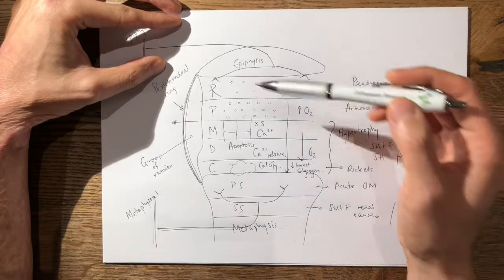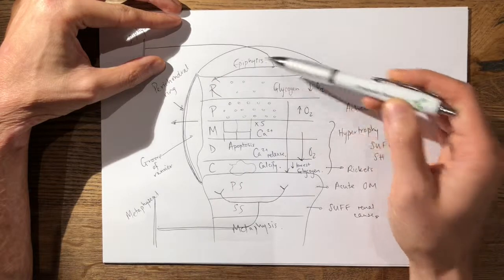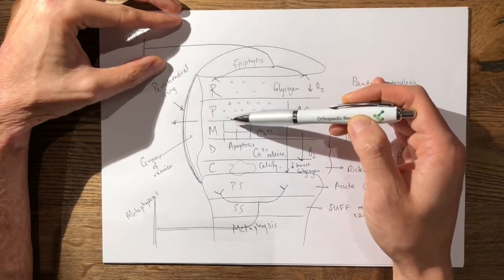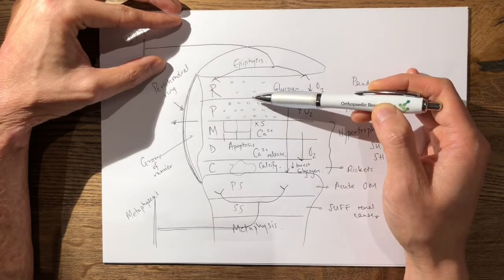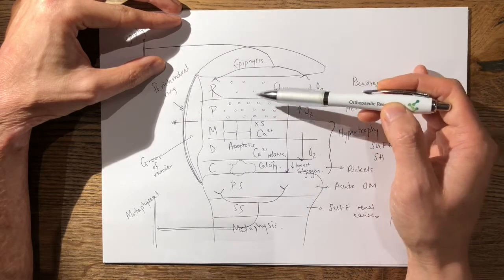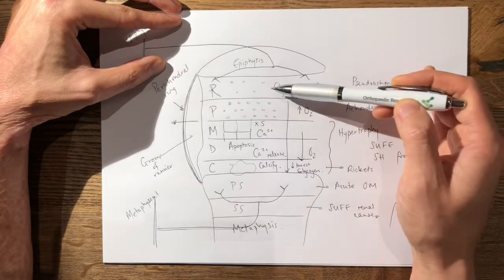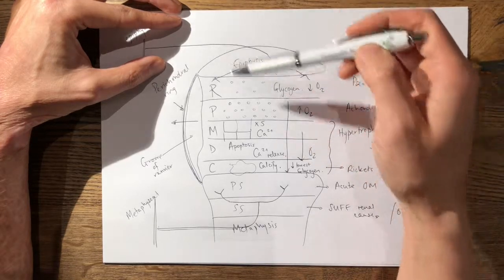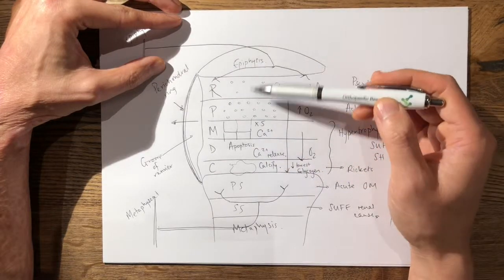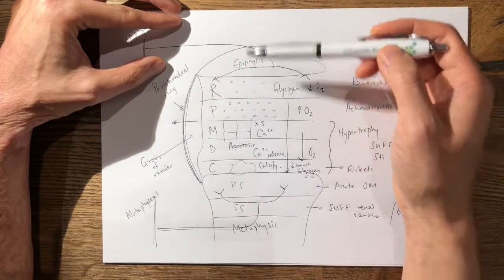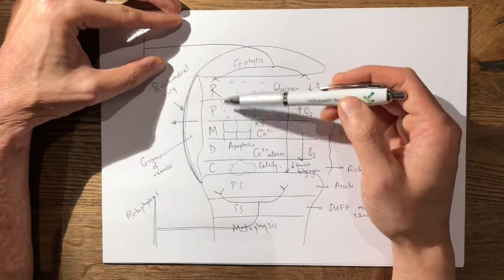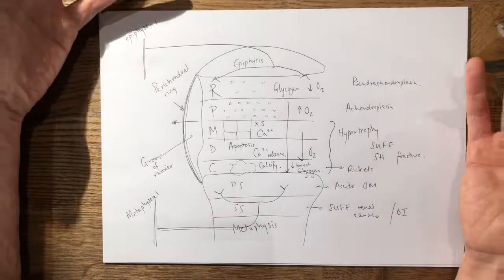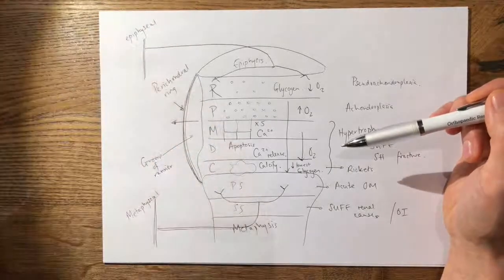Remember the epiphysis is your secondary ossification centre, and just below that you have your resting and proliferative zone. Your resting zone is where your resting layer of germinal stem cells originate from, and this is the layer along with the proliferative zone where you have the most growth potential. Whereas in Salter-Harris 3 where you go through the epiphysis, and Salter-Harris 4 where you go through the epiphysis and the metaphysis, and a crush injury of Salter-Harris 5, they all violate the resting and proliferative zone. So in summary that's the growth plate and how you can clinically apply it.